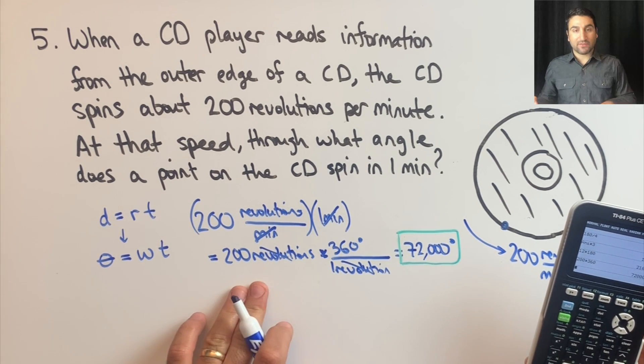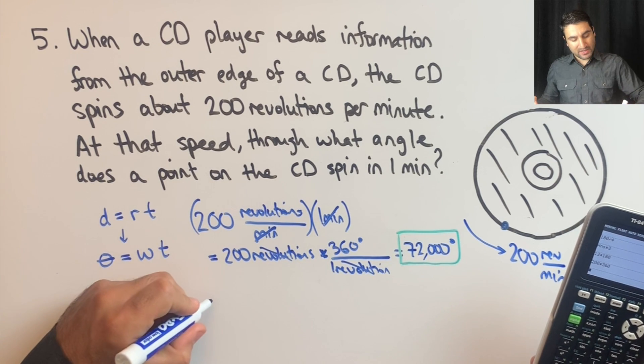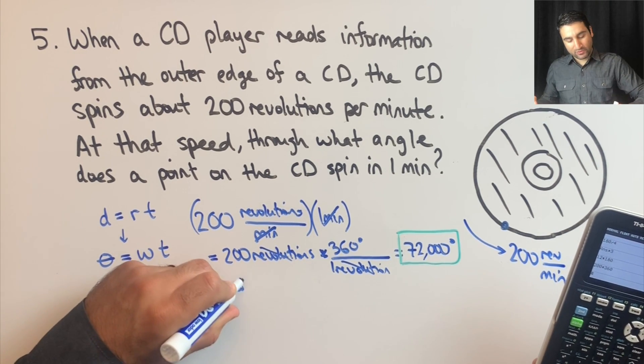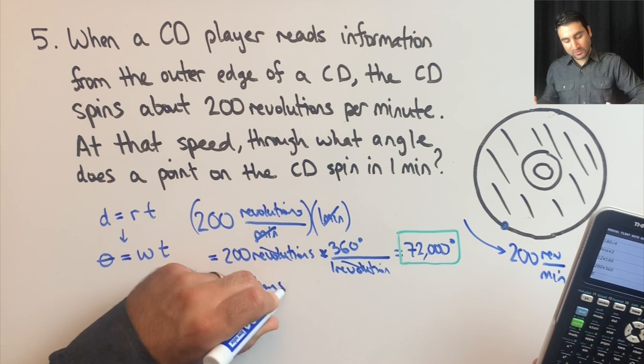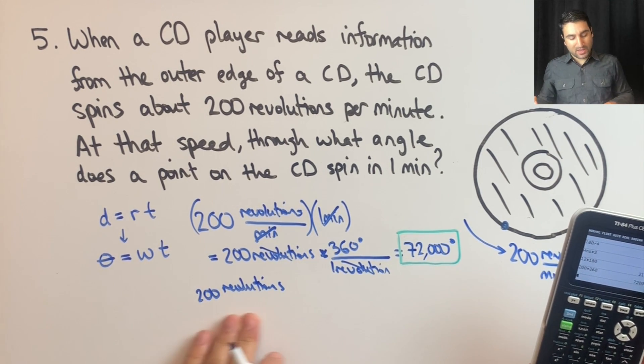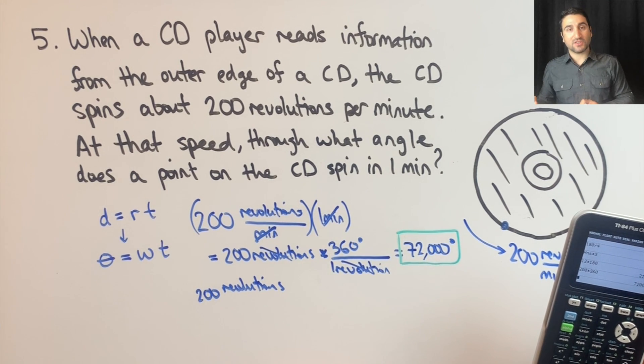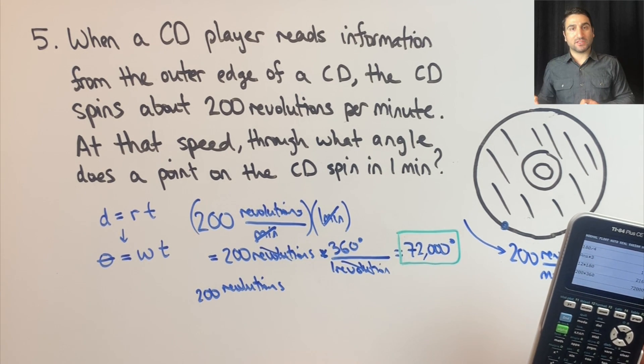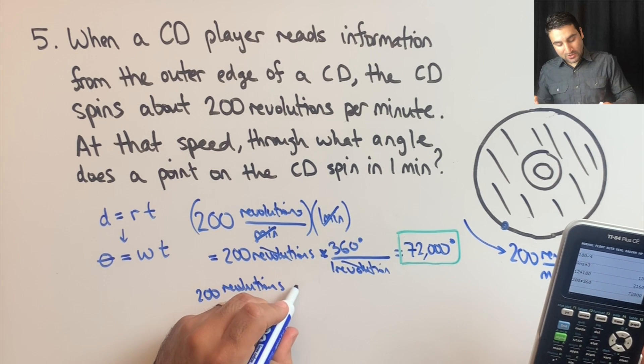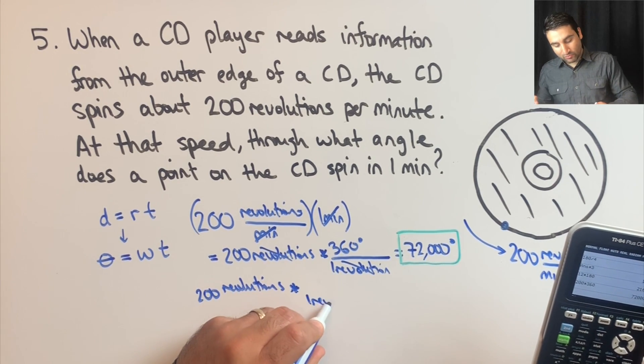So the same thing for radians, we would take 200 revolutions, and instead of multiplying it by one revolution over 360 degrees, we want to get the equivalent in terms of radians. So we're going to multiply it by one revolution.